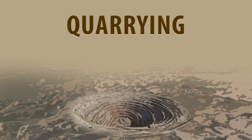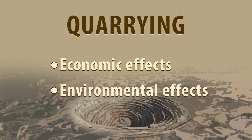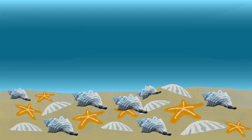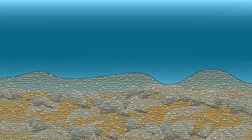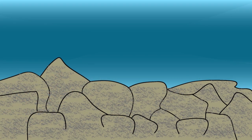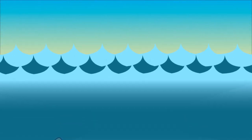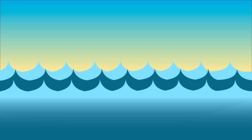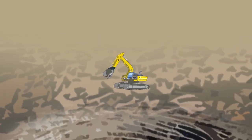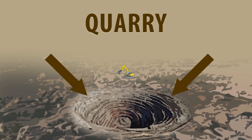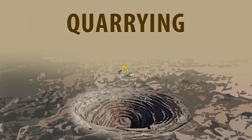We will also learn about the economic, environmental, and social effects of quarrying. We know that limestone is formed from the compression of shells and skeletons of many dead marine organisms. This means that limestone is found where there used to be large bodies of water, and must be mined. A quarry is an open mine, and quarrying is the process by which limestone is mined.